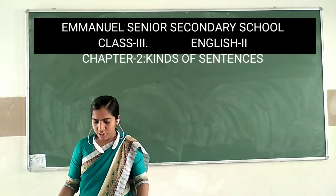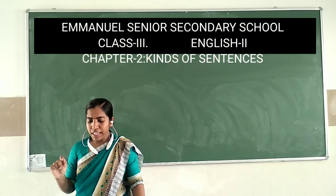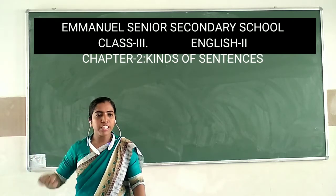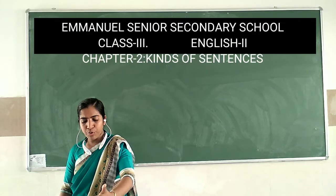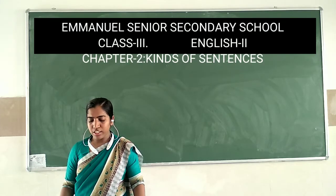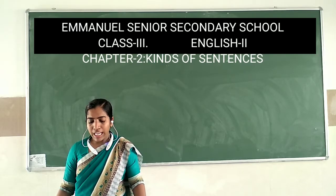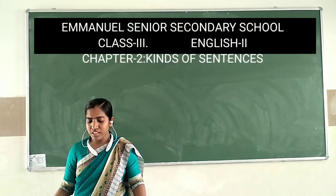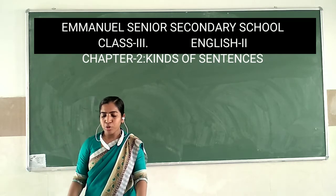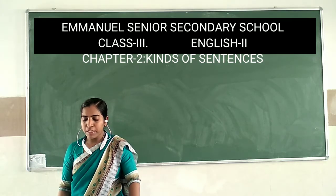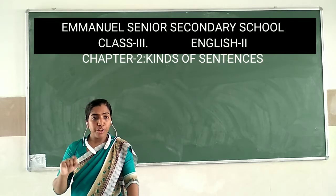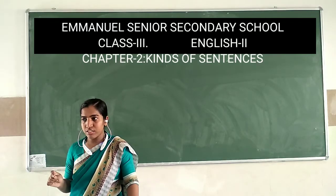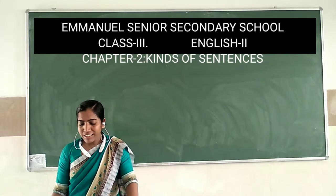Now come to Exercise B on page number 13: pick out 5 negative statements from the passage and write them below. From the paragraph given, you have to find 5 negative statements. The passage reads: 'I went to the hospital. The doctor was not there. The nurse did not give the medicine. She was waiting for the doctor. There was no medicine. The compounder could not find them. The patient was not happy.' Wherever you find no or not in the sentences, you can select those as the negative sentences.